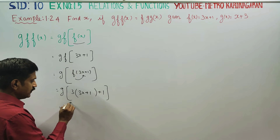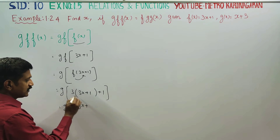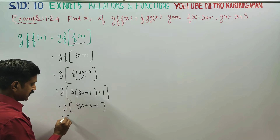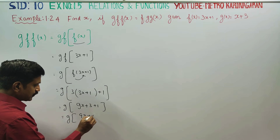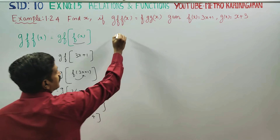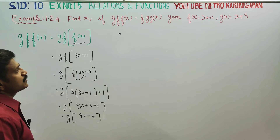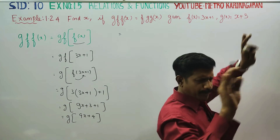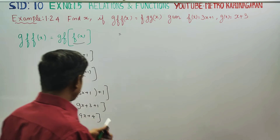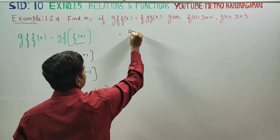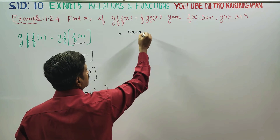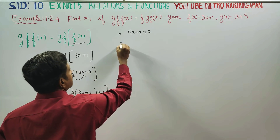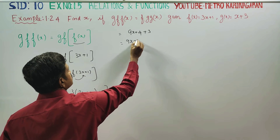G of 3 is 9x. 13 is our 3 plus 1, this is our 9x plus 1. G of 9x plus 4. G of 9x plus 4 — G of 3 minus 4, G of 30, G of 9x plus 4.